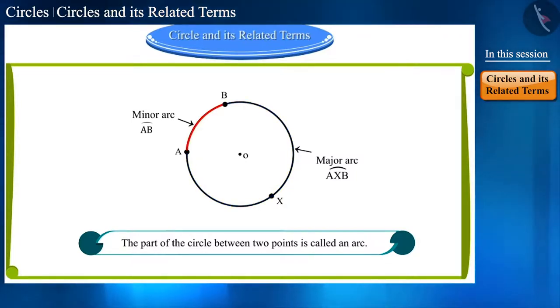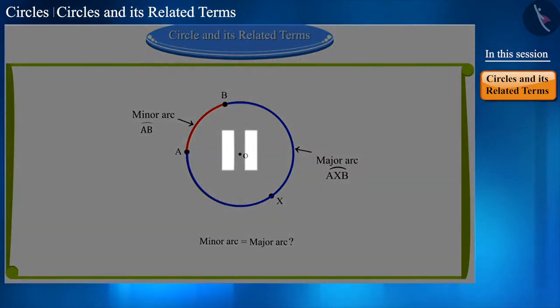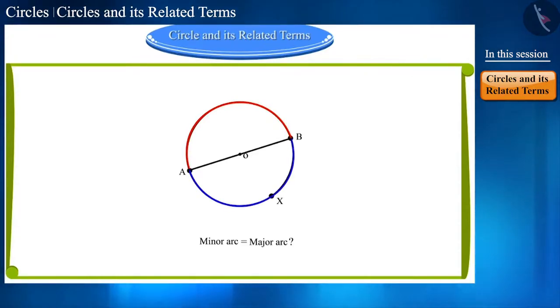That is, AB is the minor arc, which we write like this, and AXB is the major arc, where X is the point between them. Can you guess when will these two arcs be equal? You can also pause the video to think about the answer. Yes, when both these points are the end points of the diameter of this circle, then the two arcs will become equal. Each arc thus formed is called a semicircle.